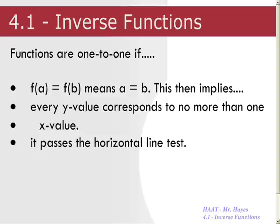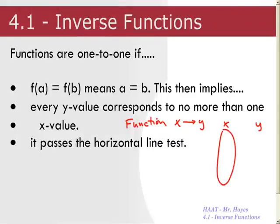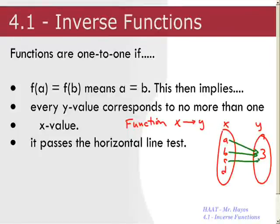Every y value corresponds to no more than one x value. Now, if you remember, for a function, we have x only goes to one y. We said originally, like, you could have, here's x and here's y, and you could have, like, a, b, c, and d, and maybe they would all go to the number three. This would be a function, because a, you only have one choice of where to go. b, you only have one choice of where to go. c, you only have one choice of where to go. d, you only have one choice of where to go. That's a function.